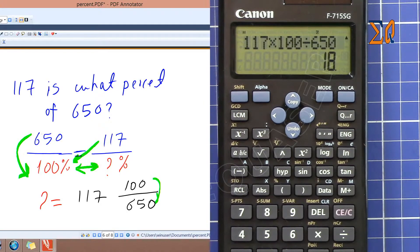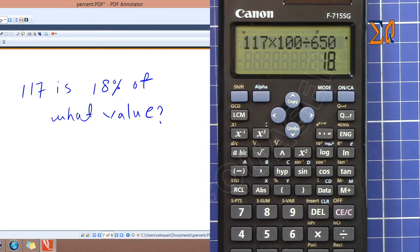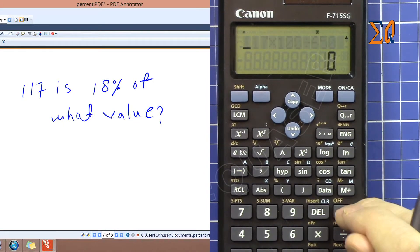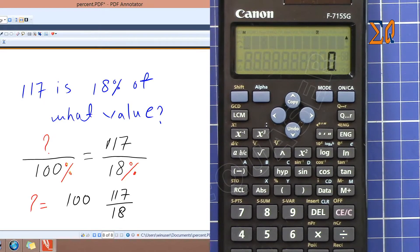So now let's say it says 117 is 18 percent of what value. We know the answer is 650, but if you don't know it, 117 is 18 percent of what value, same way.